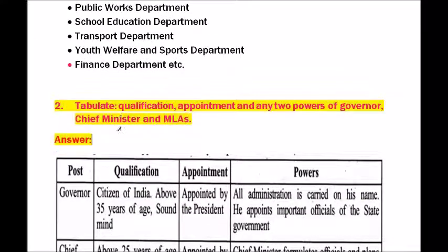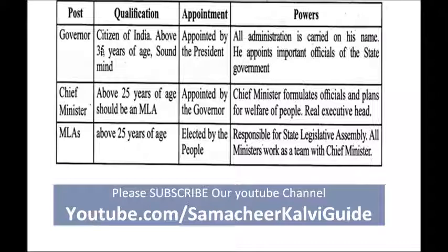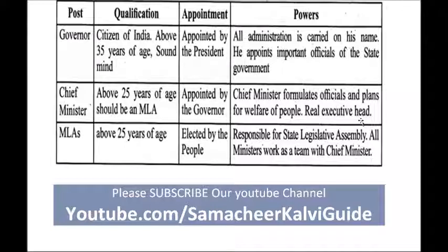Question two — table of qualifications, appointment, and any two powers of governor, chief minister, and MLAs. Governor: citizen of India, above 35 years of age, sound mind, appointed by the president; powers include administration in his name and appointment of state officials. Chief minister: above 25 years, should be an MLA, appointed by the governor; formulates plans for welfare, real executive head. MLAs: above 25 years, elected by the people; responsible to the state legislative assembly, all ministers work as a team with the chief minister.